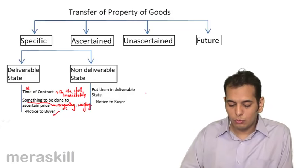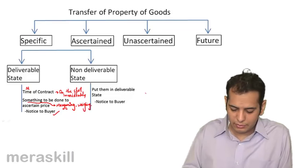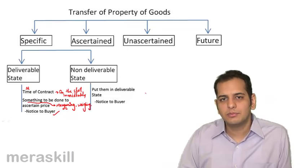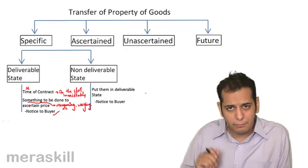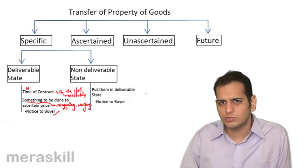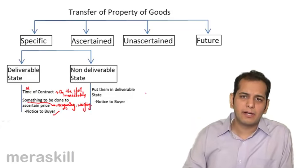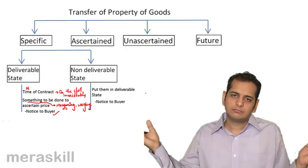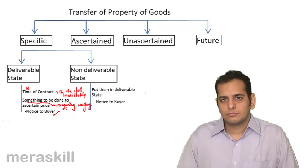If goods are not in deliverable state, the seller must put the goods in deliverable state — completing the pending finishing, packing, or branding work. He then gives notice to the buyer that the goods are now in the deliverable state, and at that point the property gets transferred.